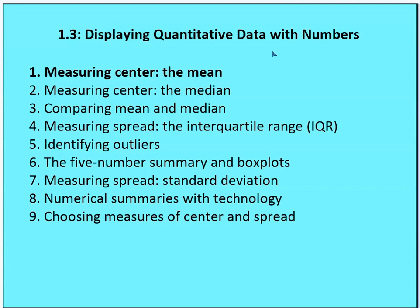We're going to talk about mean and median, and compare mean and median. Then we're going to talk about box plots and interquartile range, or IQR. We'll talk about how to identify outliers, and then we'll use that information to find a five-number summary with box plots. Then we're going to move on to talk about standard deviation and mean. We're going to compare standard deviation and mean as a way to represent data versus IQR and the median. We'll talk about technology briefly because you're going to need your calculators, which we'll introduce in another video.